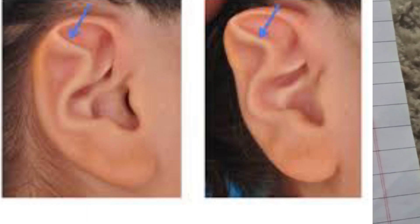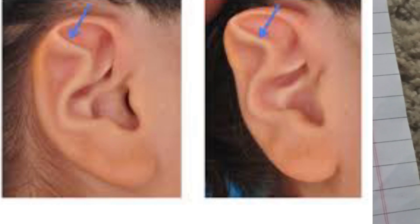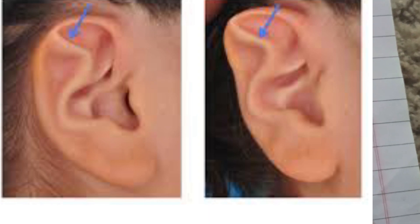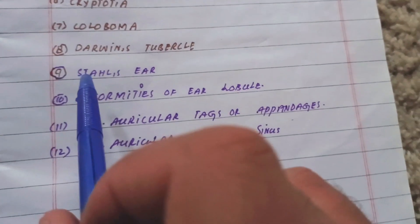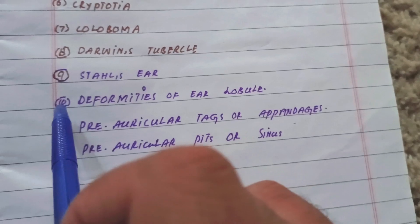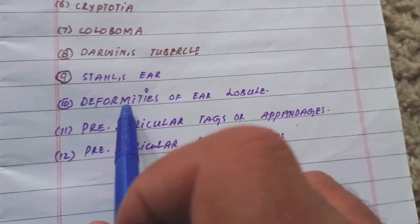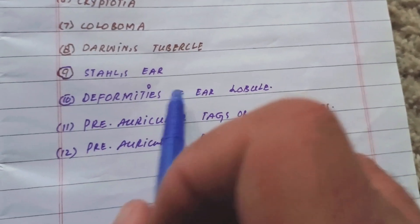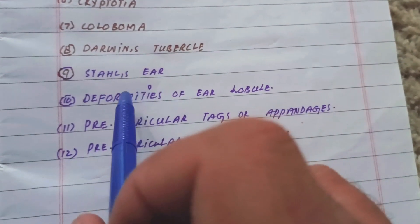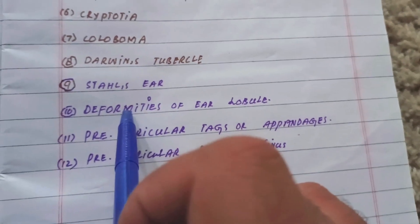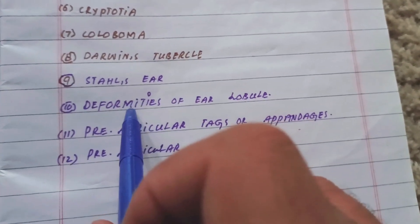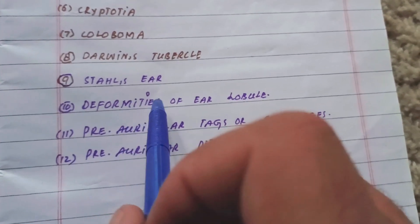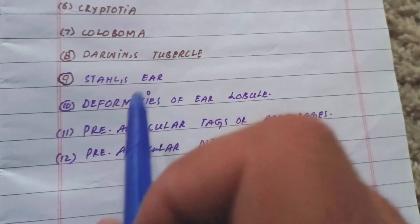In Stahl's ear, the duplicated crus reaches the rim of the helix. The tenth condition is anomalies of the ear lobule — the ear lobule may be completely absent, abnormally large, bifid, or attached and fixed.